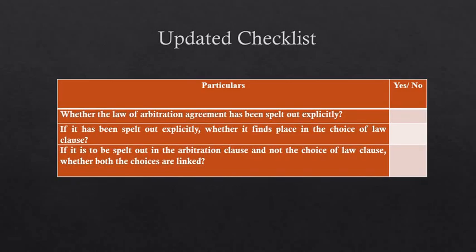Now we update the checklist. Unlike what we have done in the past, we will not provide the entire updated checklist, but only that part which relates to the law of arbitration agreement. 1. Whether the law of arbitration agreement has been spelled out explicitly. 2. If it has been spelled out explicitly, whether it finds its place in the choice of law clause. 3. If it has to be spelled out in the arbitration clause and not the choice of law clause, whether both the choices are interlinked.